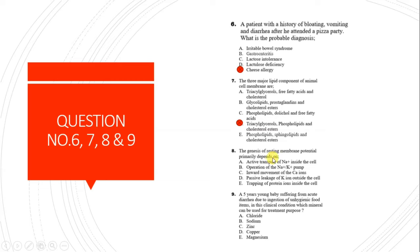Question 8: The genesis of resting membrane potential primarily depends on which process? The answer is D - passive leakage of potassium ions outside the cell. The resting membrane potential is produced by four processes: passive leakage of potassium ions outside, passive leakage of sodium ions inside, operation of the sodium-potassium pump, and intracellular proteins with negative charge. The major contribution is from passive leakage of potassium ions, equal to minus 94 millivolts.